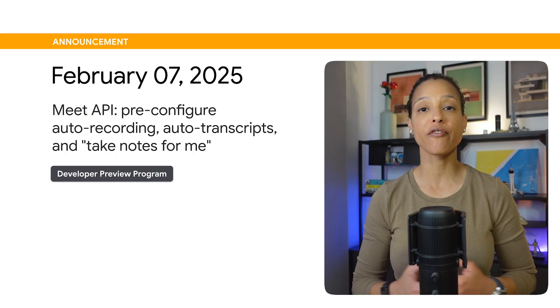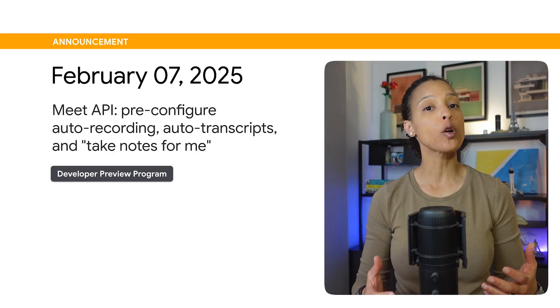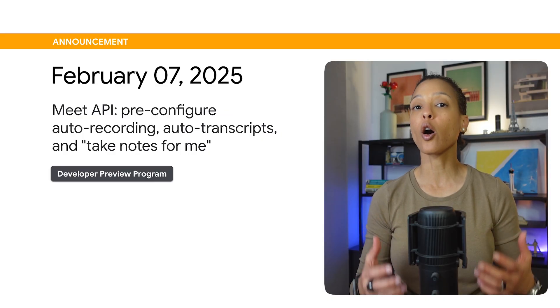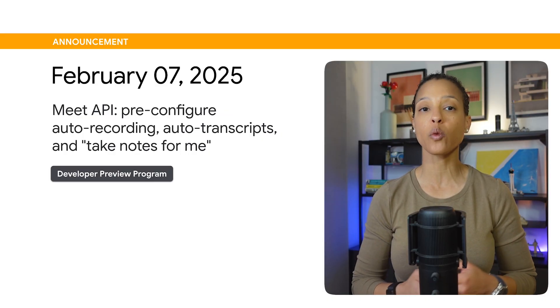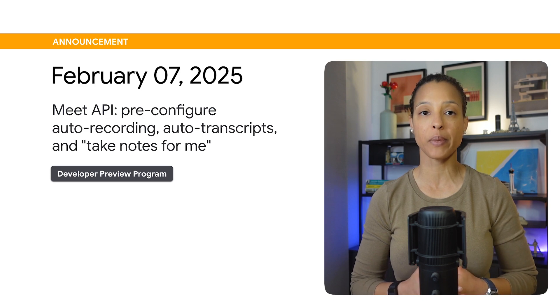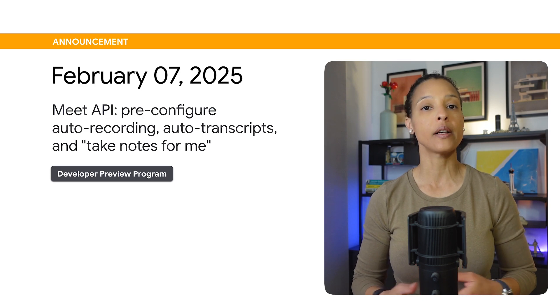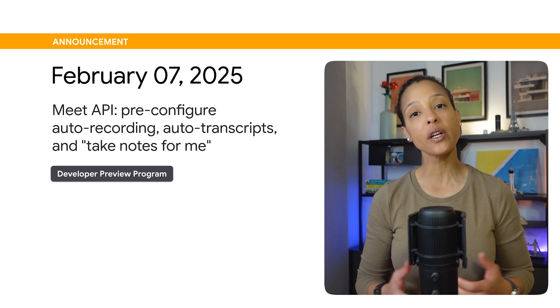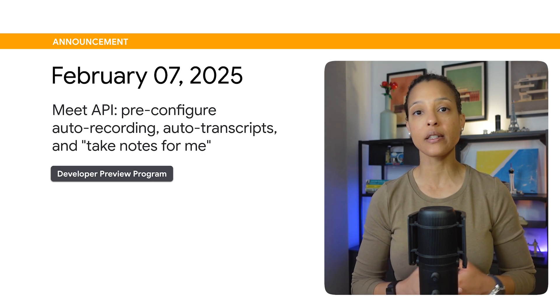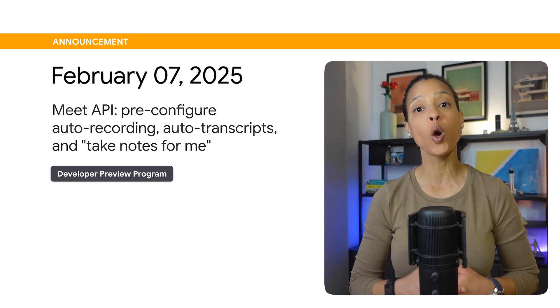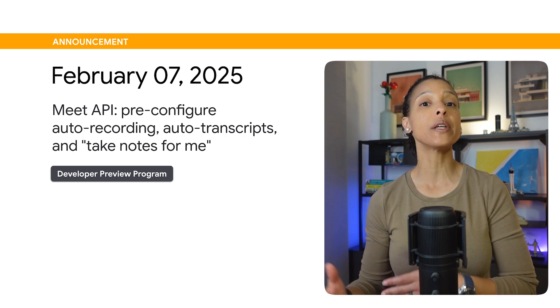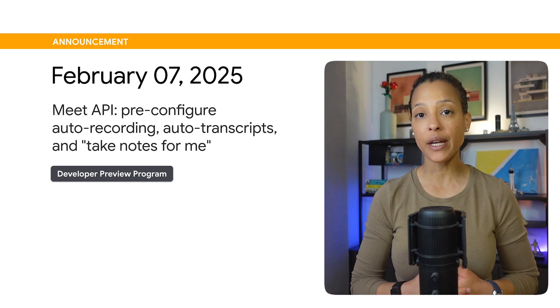You can now pre-configure auto-recording, auto-transcript, and take notes for me within a meeting space. You can pre-configure these settings either when you create a meeting space or once the meeting space is created. This feature also lets you use these settings for meetings created from Google Calendar.